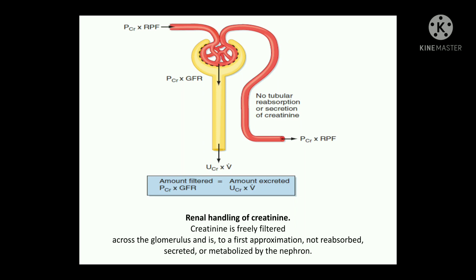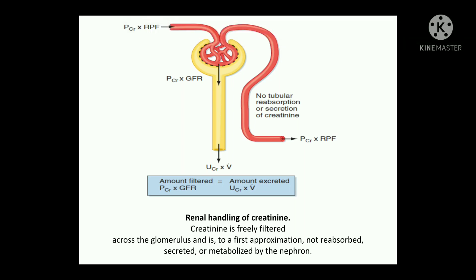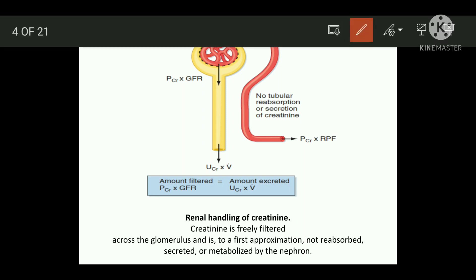Here you can see the afferent and efferent arterioles, and the glomerulus, showing how filtration takes place. When creatinine is given here, the amount which is filtered is equal to the amount which is excreted. In the afferent arterioles, creatinine goes through and exits from the efferent arterioles. The key point to note is that there is no tubular reabsorption or secretion of creatinine.